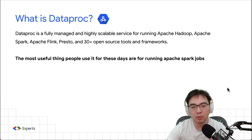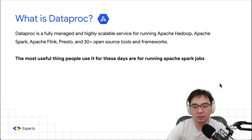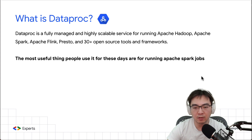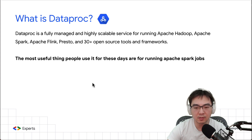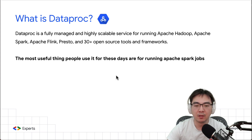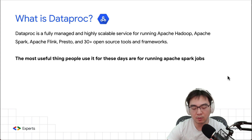What is Dataproc? It's a fully managed and highly scalable service for running Apache Hadoop, Apache Spark, Apache Flink, Presto, and many other open source tools and frameworks. From my knowledge, the most useful thing people use it for these days is running Apache Spark jobs — that's probably one of the only things still very popular that lots of people use, and this is what Dataproc allows you to run on Google Cloud.